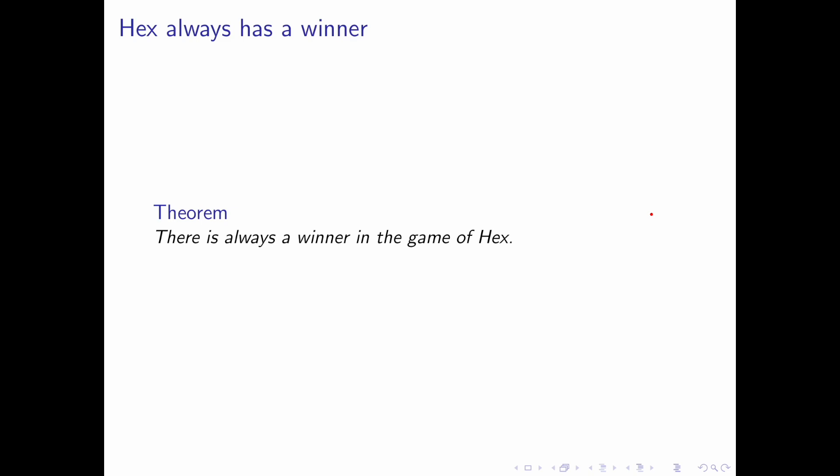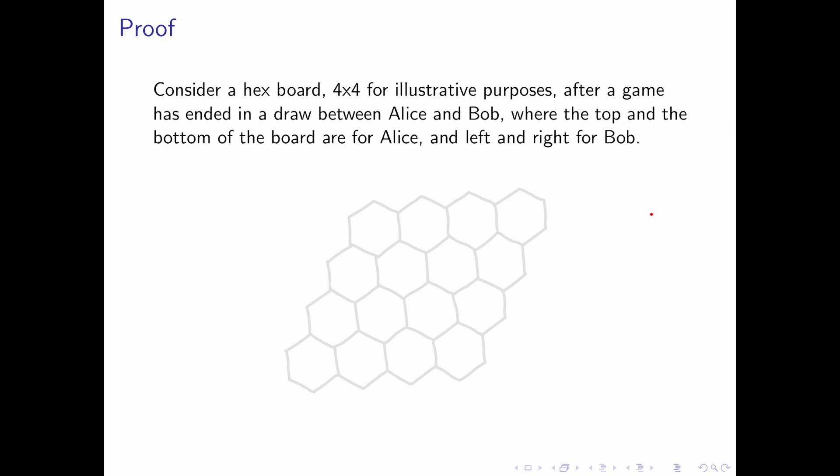And now we will prove that the game of hex always has a winner. We will consider a hex board and we'll just assume it's a 4x4 board for now, just so that the concepts are easier to see. We'll assume that the game had ended in a draw between Alice and Bob. And as per our earlier example, Alice plays from top to bottom and Bob plays from left to right.